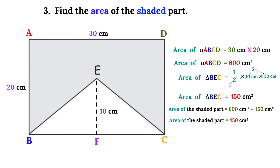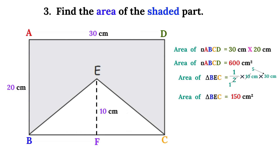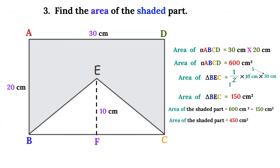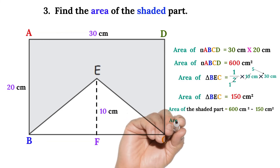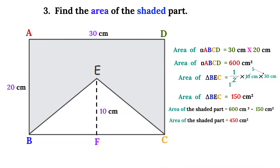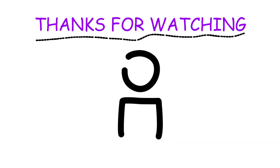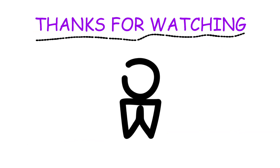Now to get the area of the shaded part, we will have to subtract 150 centimeters squared from 600 centimeters squared. You subtract the area of the triangle from the area of the rectangle ABCD, and then you will get the area of the shaded part. Area of the shaded part is equal to 600 centimeters squared minus 150 centimeters squared, so the area of the shaded part is equal to 450 centimeters squared. Thanks for watching, bye.